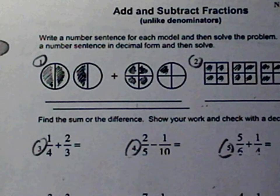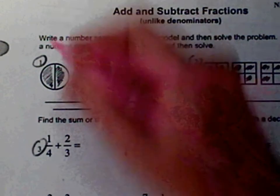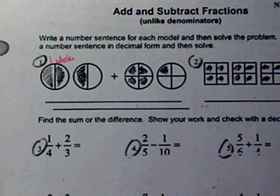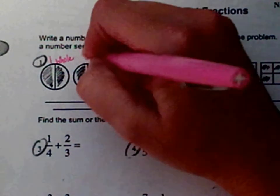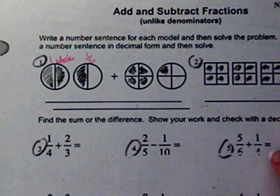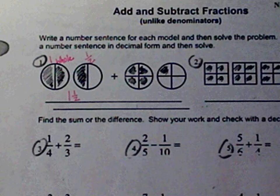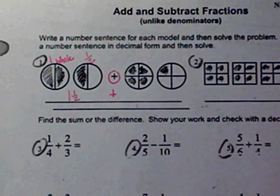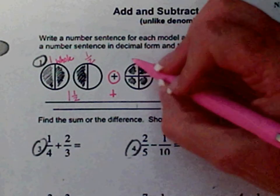The first part gives us a picture to represent a fraction and we have to figure out the fraction that goes with the picture. When we look at the circle and it's completely shaded in, that represents one whole because both pieces are shaded. The other side has only one half shaded, so that picture together represents one and one-half.